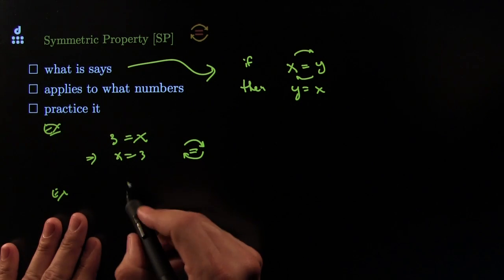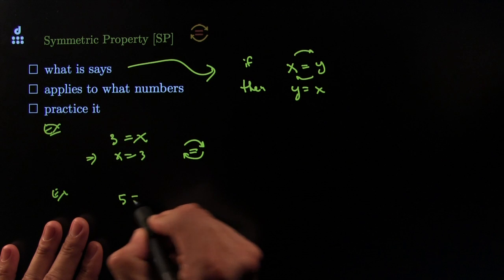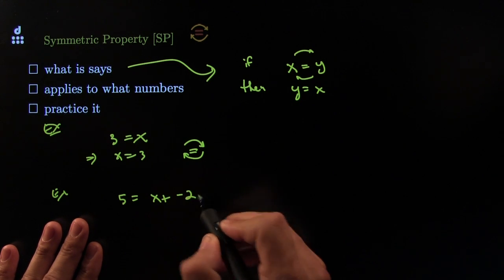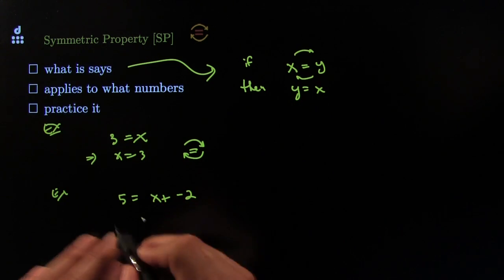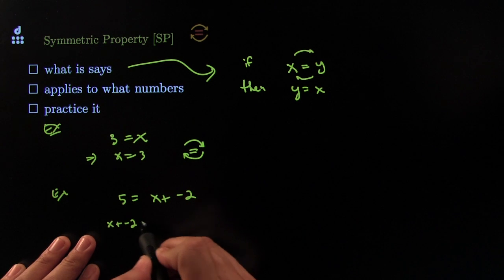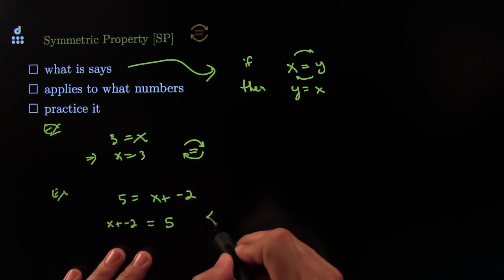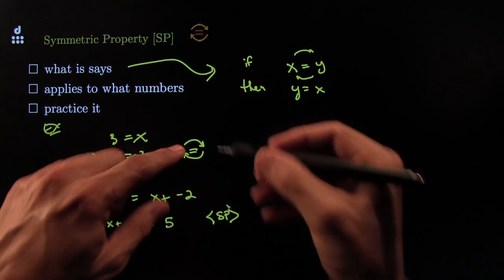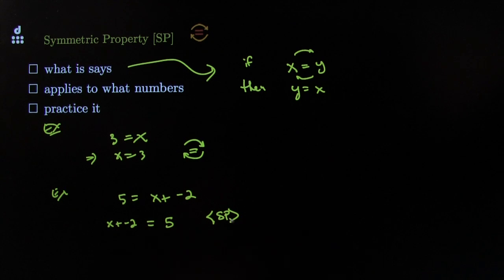Another example: suppose I have five is equal to x plus negative two, and I don't like the x plus negative two on that side. Well, I can switch it over: x plus negative two is equal to five. The reason I can do it is by the Symmetric Property. You can use the icon or the initials. Pretty easy, right?